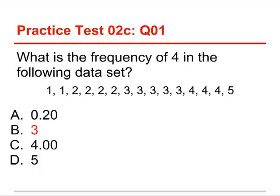The 0.20 you might get if you divide how often it occurs by the total number of things. That's a relative frequency. That's not what we want. 4.00 is the actual value itself, not its frequency, but the score. 5 is the maximum value. So 3, because the score or value of 4 occurs 3 times in this data set.